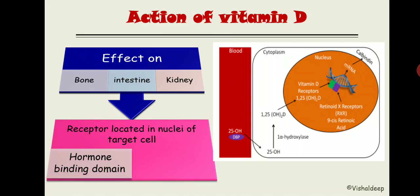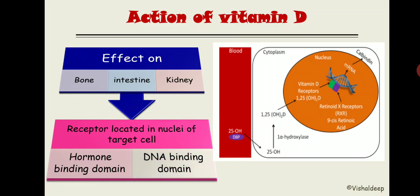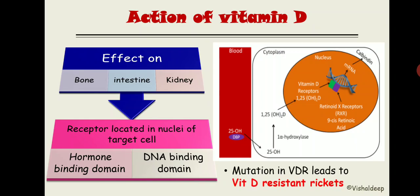Mutation of the vitamin D receptor — VDR — ultimately leads to the clinical condition known as vitamin D resistant rickets, which will be discussed in subsequent slides.